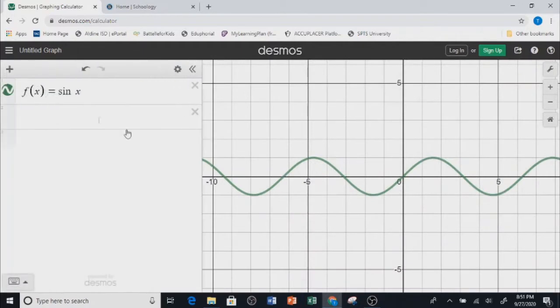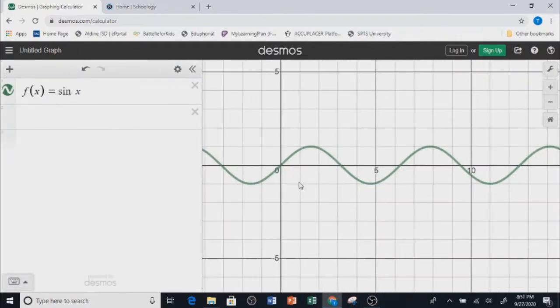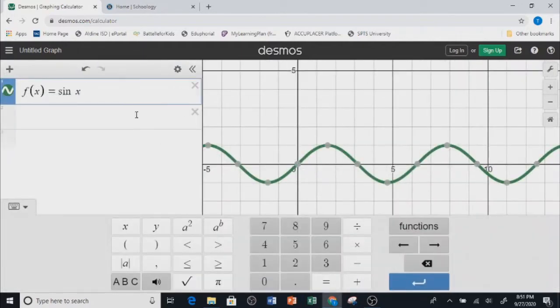If we want to restrict the domain of this sine of x, you can just put a squiggly bracket in front of that sine of x.